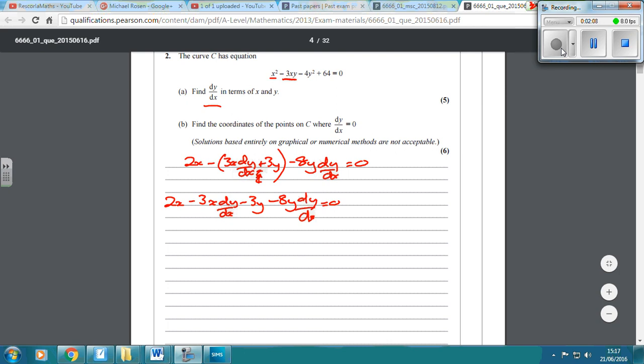So because both of the dy by dx's are negative, we're going to get them onto the right-hand side. So you've got 2x minus 3y, get everything else on the other side, you've got 3x dy by dx plus 8y dy by dx.